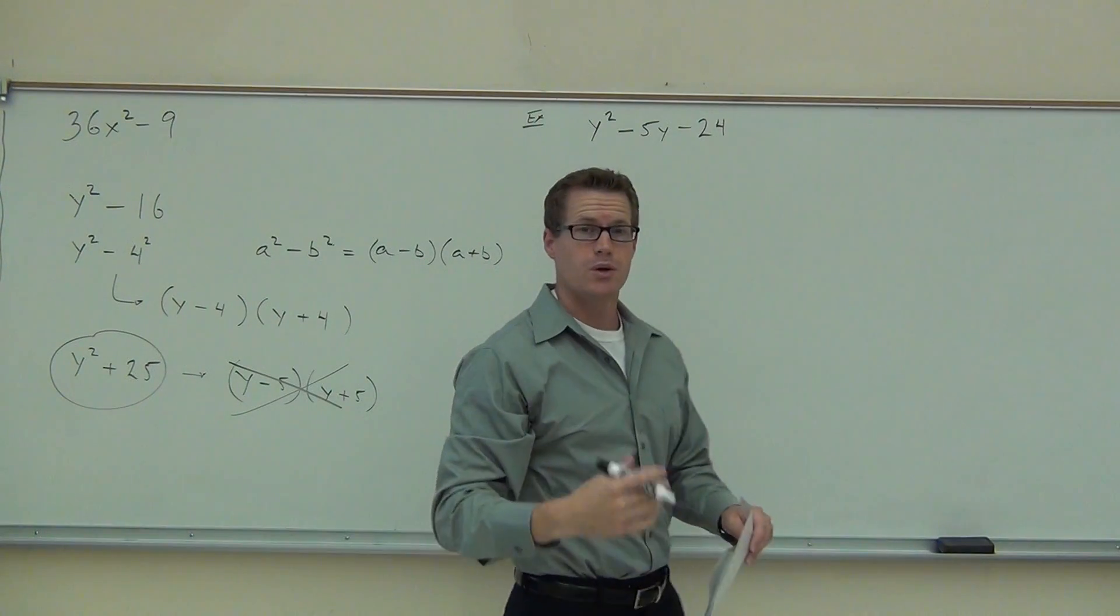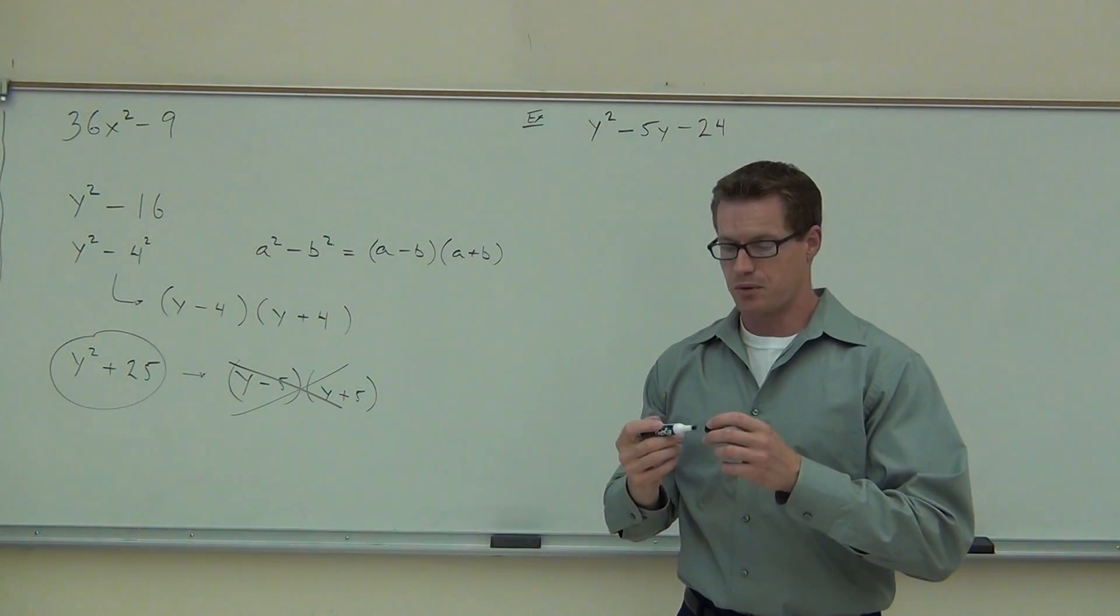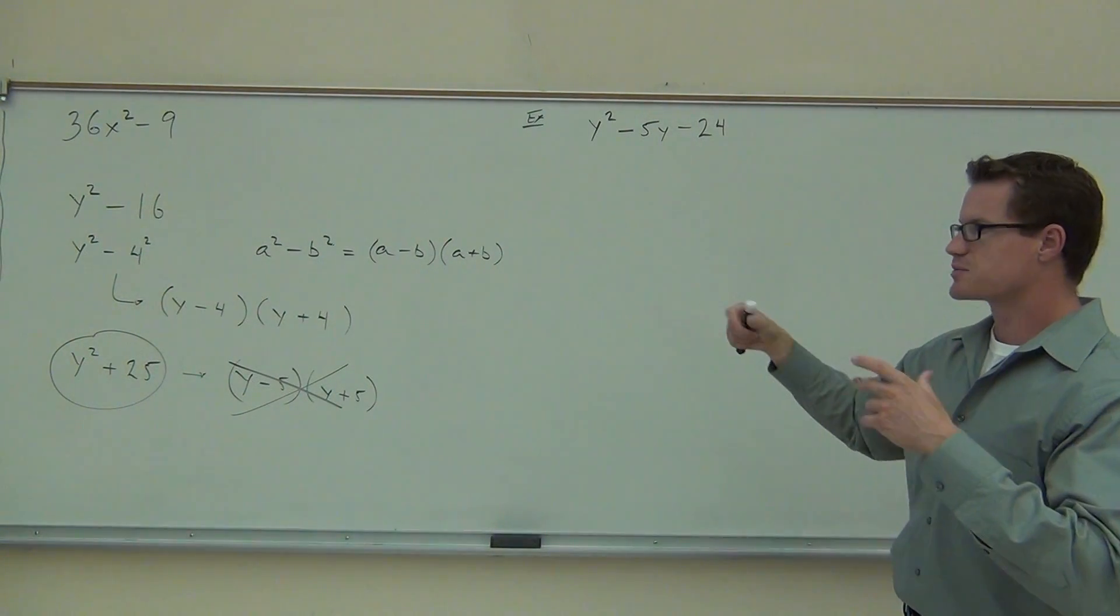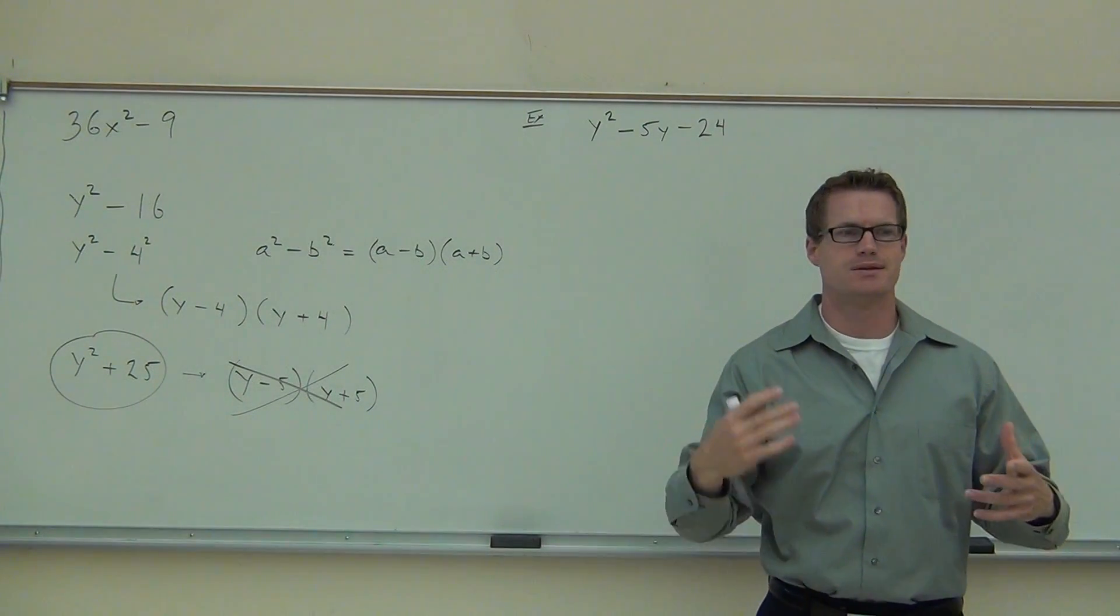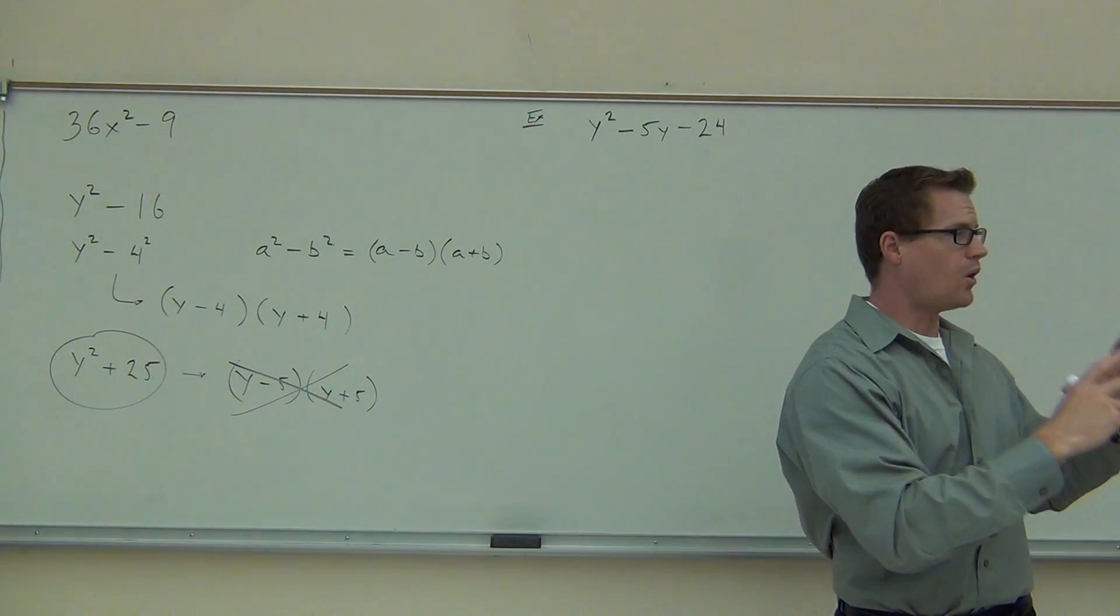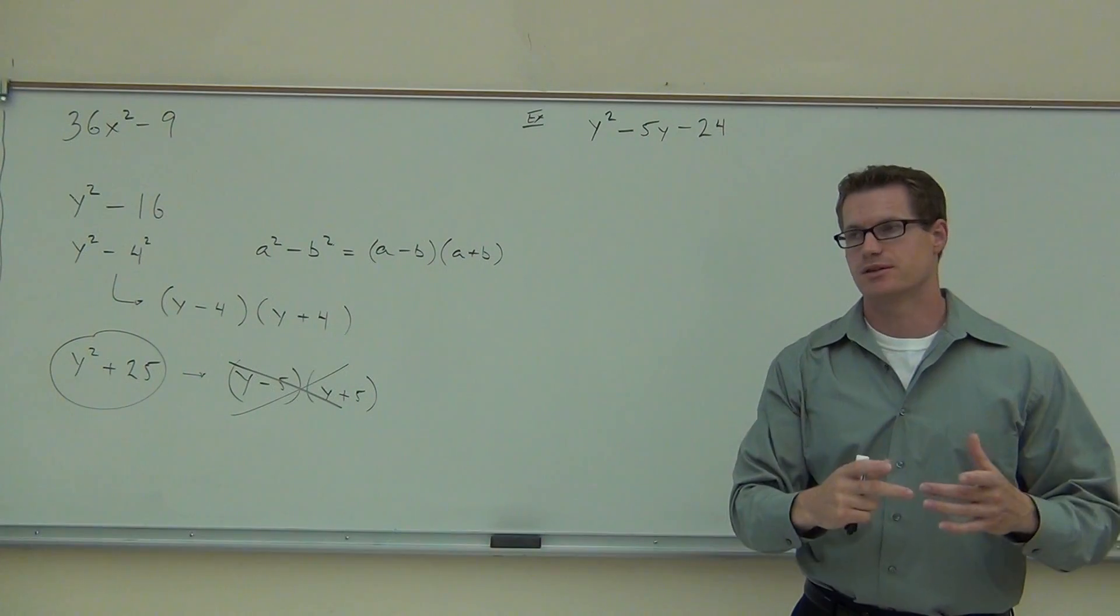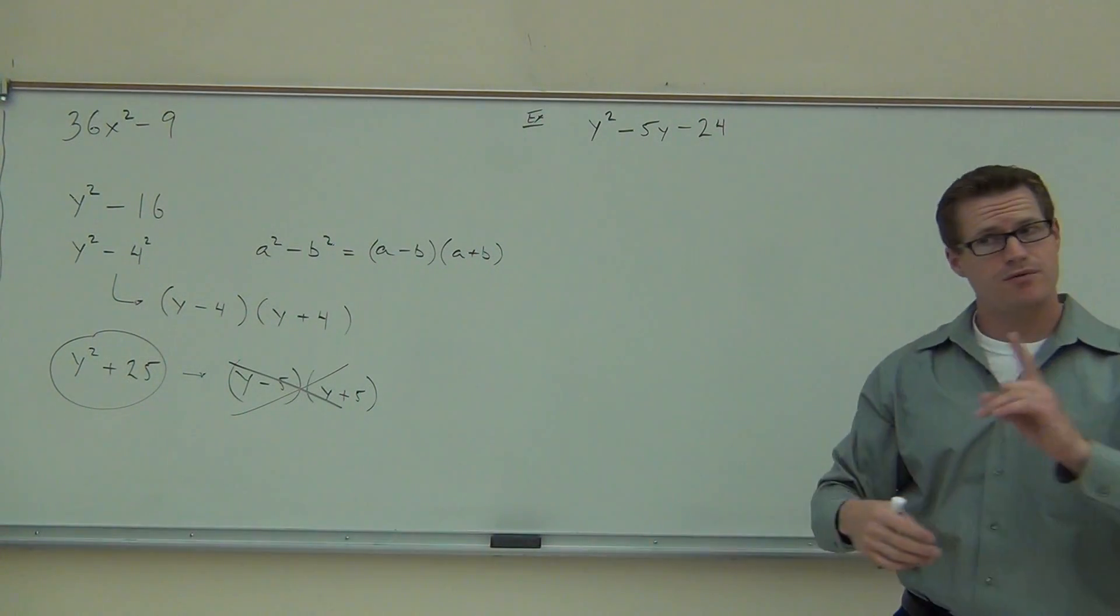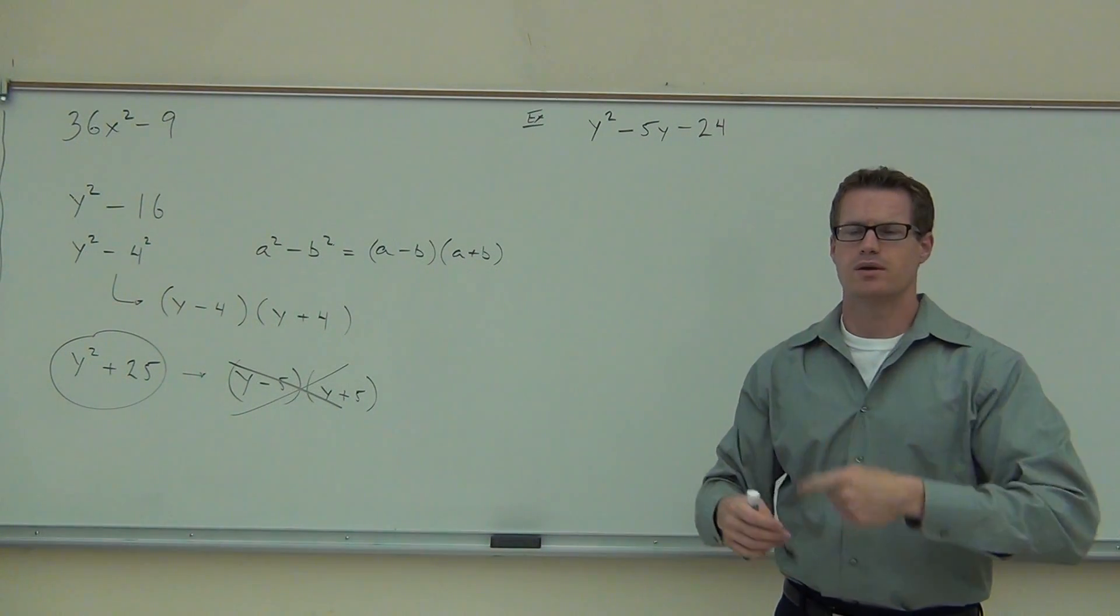Now, you'll notice on your notes from last time, the first thing we do is we check for a greatest common factor. So let's do that now. We have three terms here separated by those minuses. Do we have a greatest common factor? What we mean by that is a number or a variable or an expression that is common to all three of these, that divides all three terms. Do we have that? No. So we've got to move on. Next thing I told you to do is you count the number of terms. Greatest common factor is first. But you count the number of terms after that. How many terms do we have again? Three.